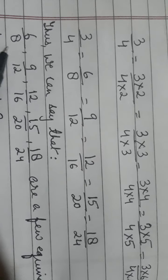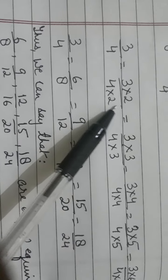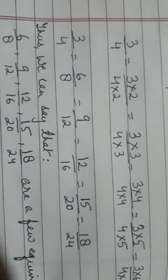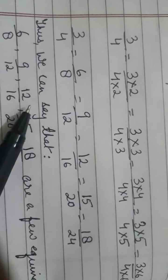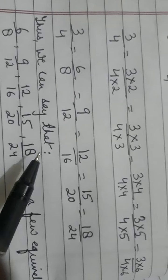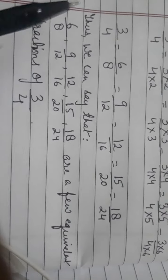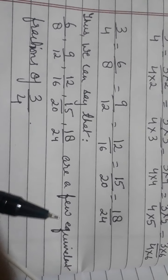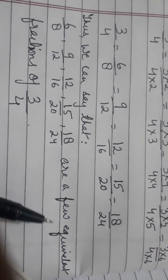So we can say that 6/8, 9/12, 12/16, 15/20, and 18/24 are a few equivalent fractions of 3/4. We say 'a few' because there are more, but we are taking equivalent fractions up till 5. These are the fractions equivalent to 3/4.